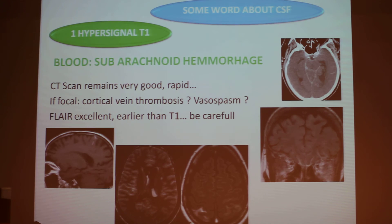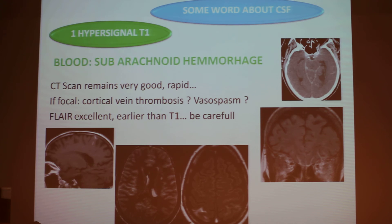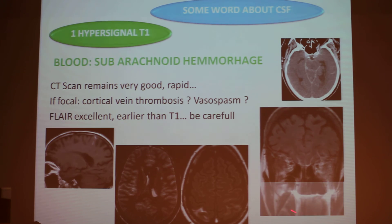And be very careful when you have the images — always look at all the images. In this patient we saw an image which is very strange, looking like a frontal subarachnoid hemorrhage. In fact it's just artifacts due to the teeth. So be very careful when you interpret FLAIR — as soon as you have metallic material in the mouth, all the images can be artifacts. You have to be very careful in your interpretation.